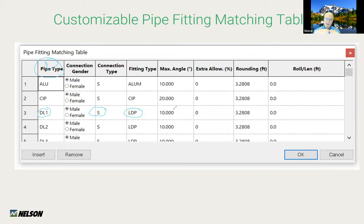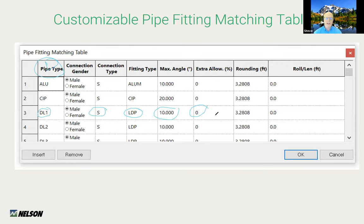When we're drawing that on the design, how many degrees can we bend that pipe before it seeks a fitting? That's described in the maximum angle area. There's also extra allowance — if there's snaking you want to accommodate, you may add 3% to this pipe type. It's going to round up — in this database to the next meter, but you could round to the next 100 feet or the next 20-foot length if you're selling PVC pipe in 20-foot lengths.